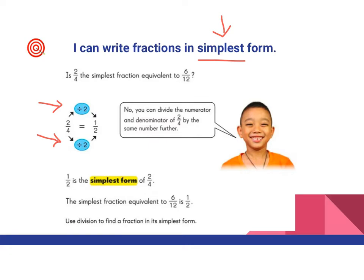If we look at two-fourths here, if we divide both the numerator and denominator by two, I get the fraction one-half. And since I can't divide the one and the two by anything else, we would say one-half is definitely in simplest form — I can't divide any further.